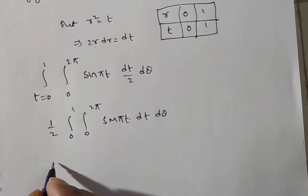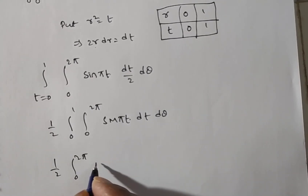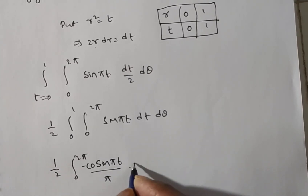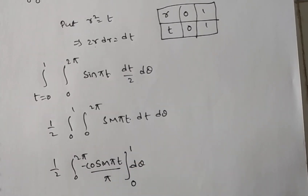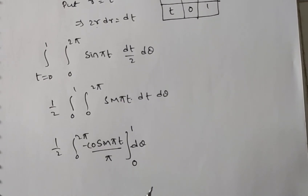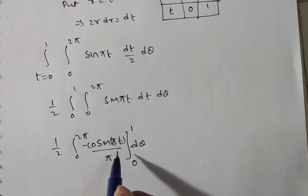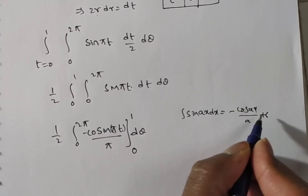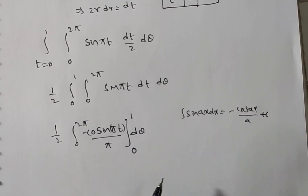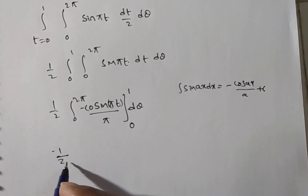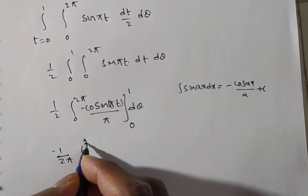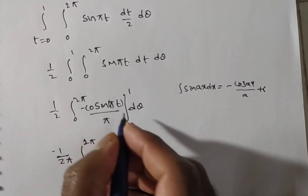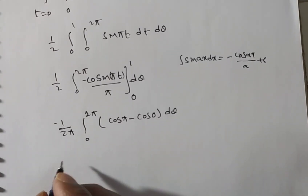We can now integrate sin(πt) easily. The integral of sin(πt) with respect to t is −cos(πt)/π, using the formula: integral of sin(ax) dx = −cos(ax)/a. So we get (1/2) times integral from 0 to 2π of [−cos(πt)/π] evaluated from t = 0 to 1, times dθ. Substituting limits: upper limit gives −cos(π·1) and lower limit gives −cos(0).